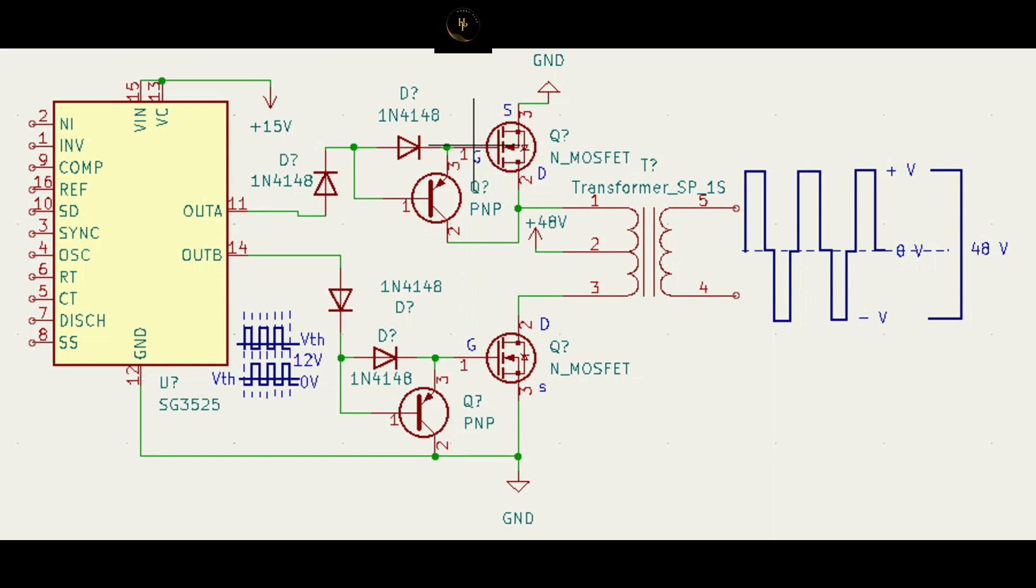When positive voltage appears at the gate, the MOSFET turns ON. Your power supply goes through this coil, this part of the coil, not the total. This part of the coil goes from drain to source to ground.